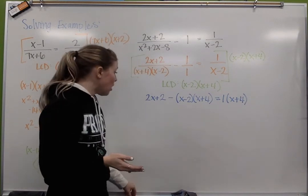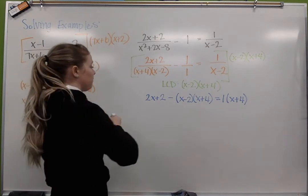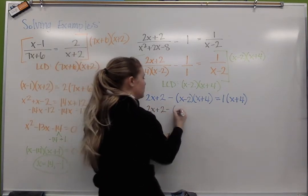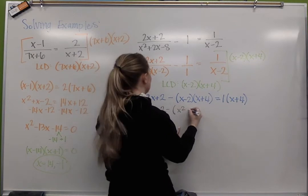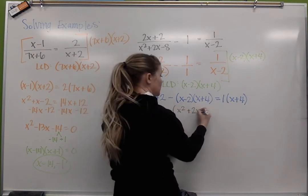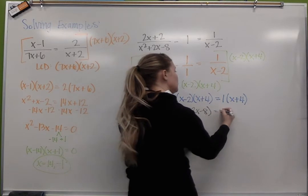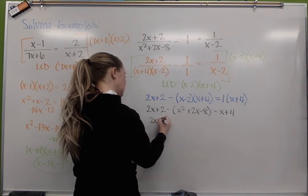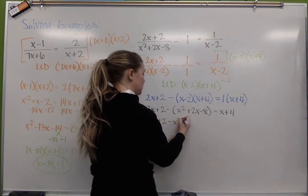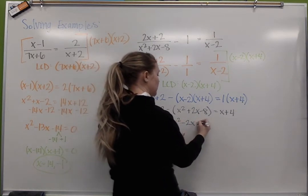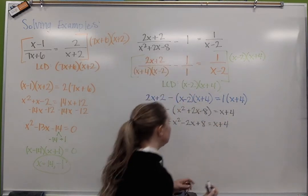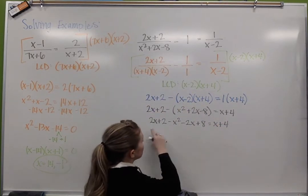So we've canceled out the denominator, we're now ready to solve. So I'm gonna go ahead and simplify. Here I have 2x plus 2 minus x squared plus 2x minus 8 equals x plus 4. I'm gonna go ahead and distribute my negative so I get negative x squared minus 2x plus 8 equals x plus 4.